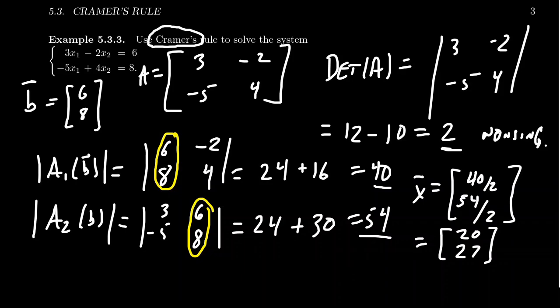We can verify: 3 times 20 is 60, and 2 times 27 is 54; 60 minus 54 is 6, satisfying the first equation. For the second: -5 times 20 is -100, and 4 times 27 is 108; their difference is 8, satisfying the second equation. So this does in fact solve the system.